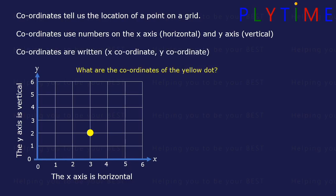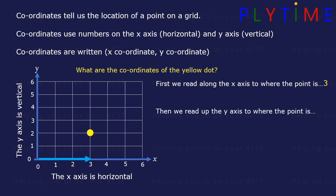What are the coordinates of the yellow dot? First read along the x-axis to where the point is, that's 3. Then read up the y-axis to where the point is, that's 2.